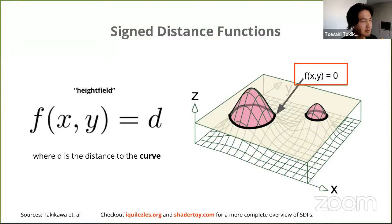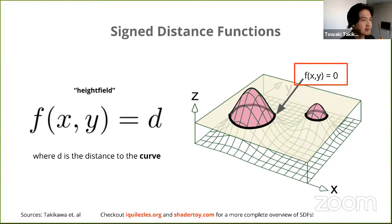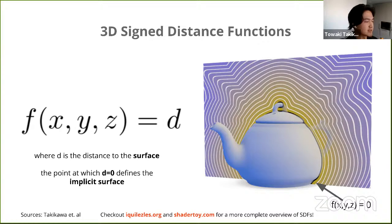The representation we look at is signed distance functions. In the 2D case, a signed distance function is a function of x and y, where x and y are positions on a grid, and it gives you d — the distance to the nearest curve. All points at which this signed distance function equals zero defines the isocurve, which you can see on the right. In the 3D case, it's a function of x, y, and z — a 3D position — giving d as the nearest distance to the surface. All points where d equals zero define the implicit surface.